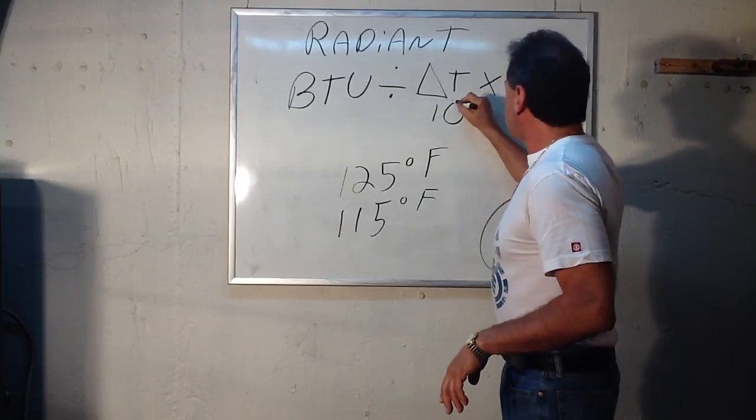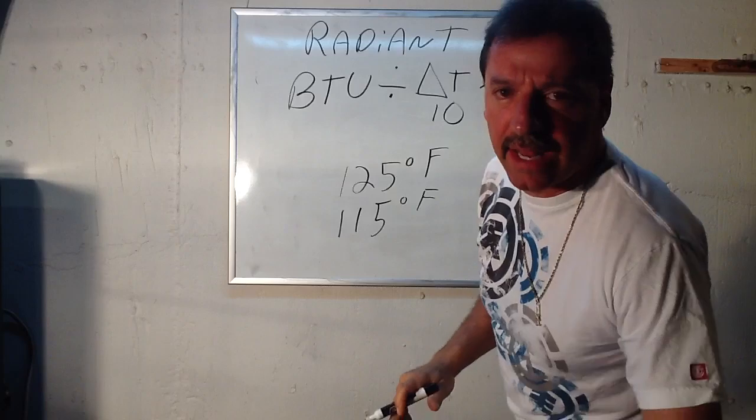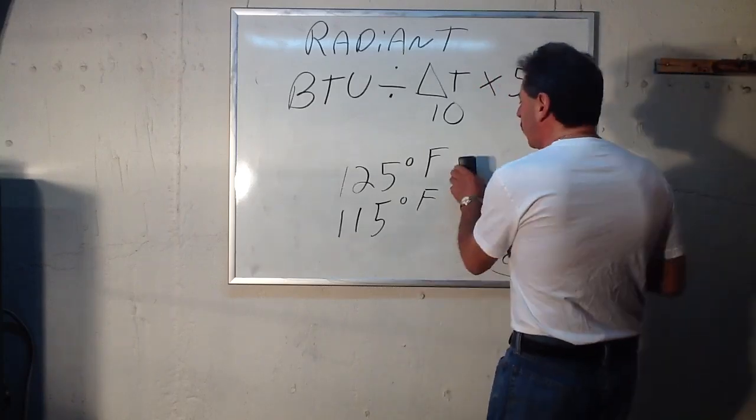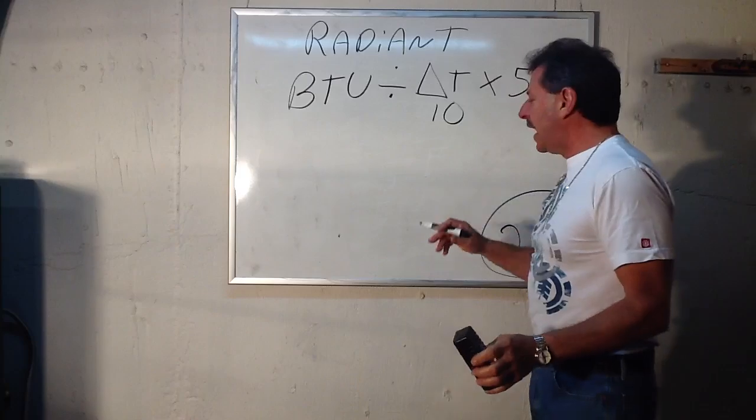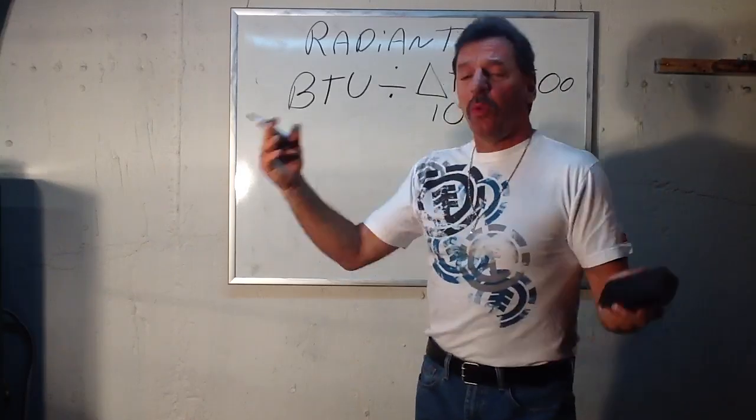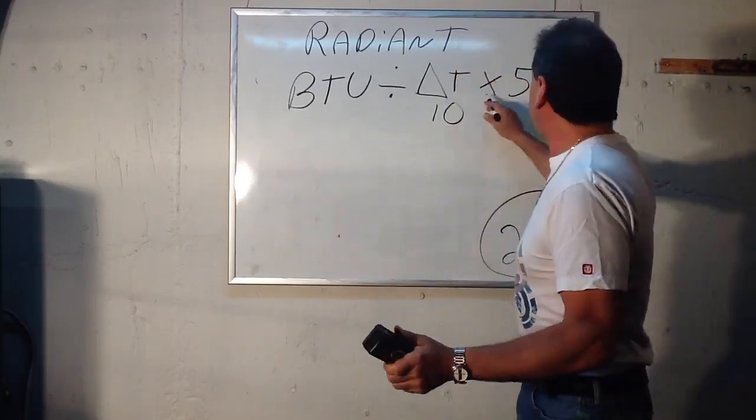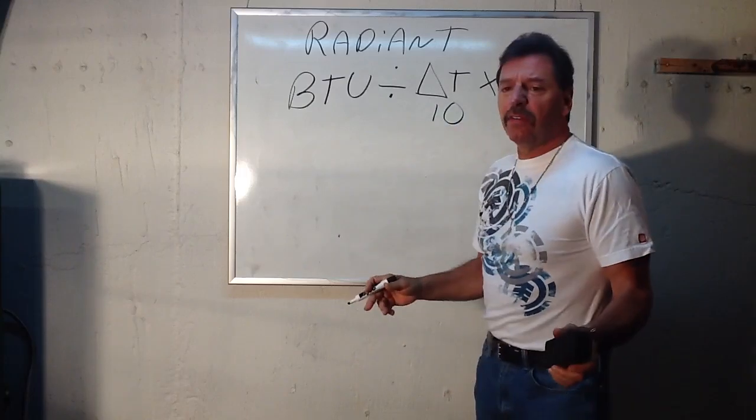I just want to get that crystal clear: with baseboard it's 20, with radiant heat it's about 10. Or if you raise your radiant heat, whatever the Delta T is, you use that number times 500 to get the flow rate.